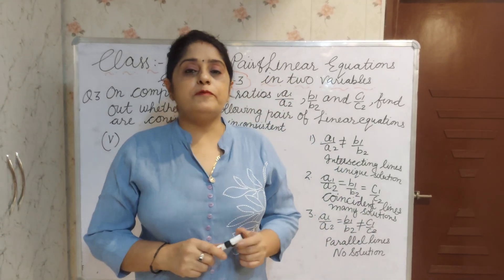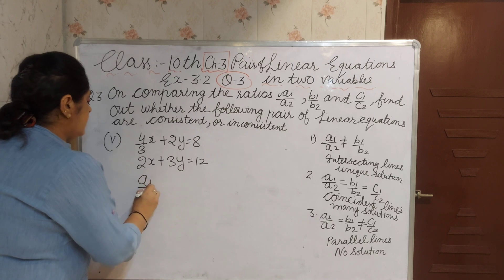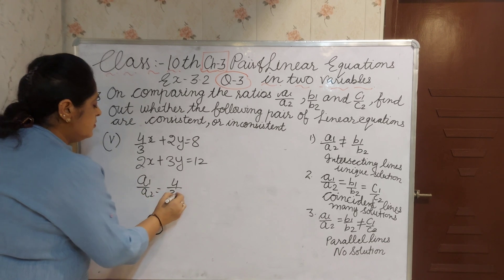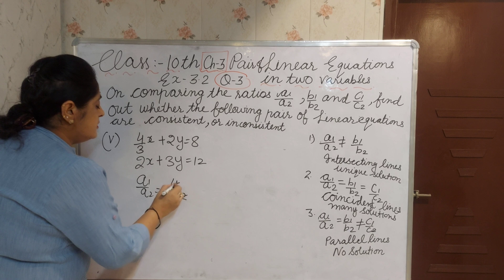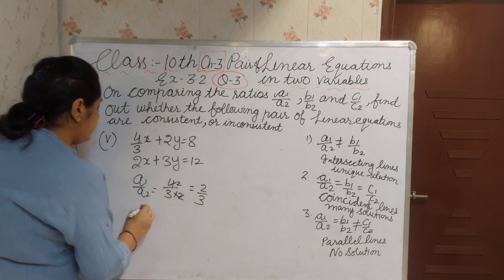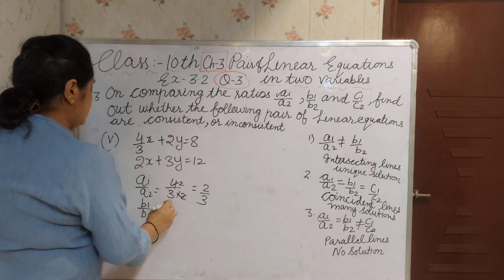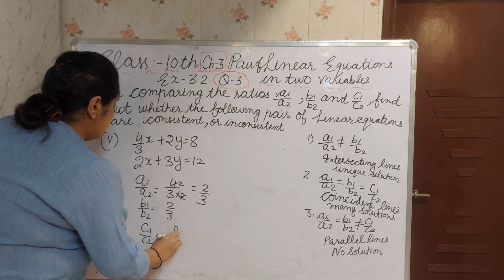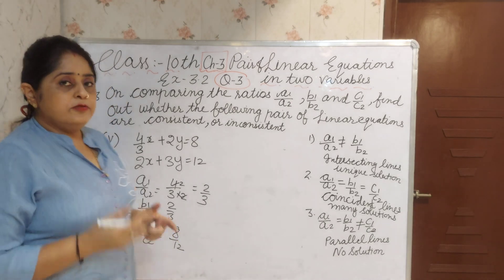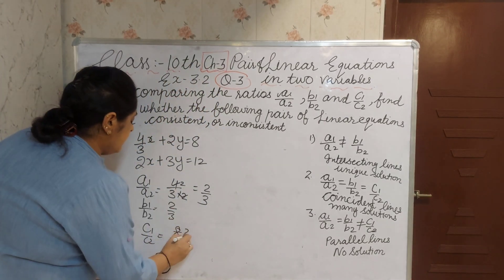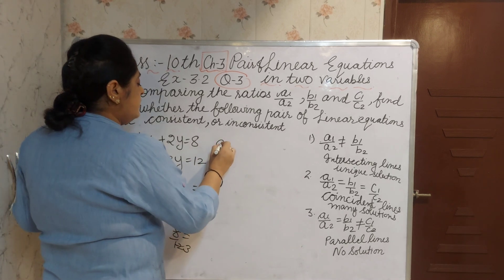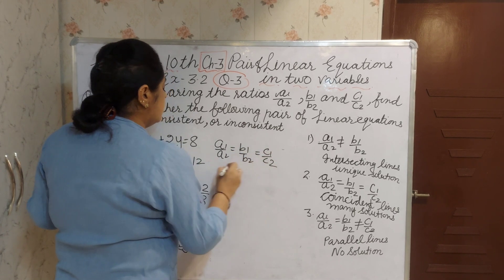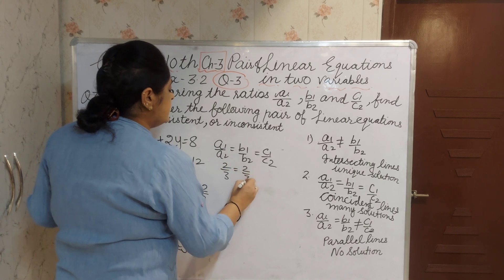Now I am explaining the fifth part. We compare A1 by A2: 4 by 3 with 2 as the denominator A2. Writing and reducing the term, you get 2 by 3. Now B1 by B2 is 2 by 3. And C1 by C2 is 8 by 12. Reducing by table of 4, 4 twos are 8 and 4 threes are 12, you get 2 by 3. When you compare, A1 by A2 equals B1 by B2 equals C1 by C2: all are 2 by 3.